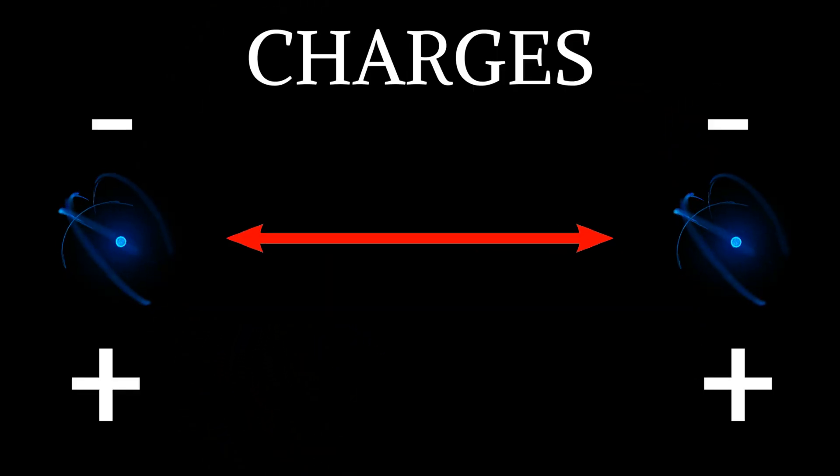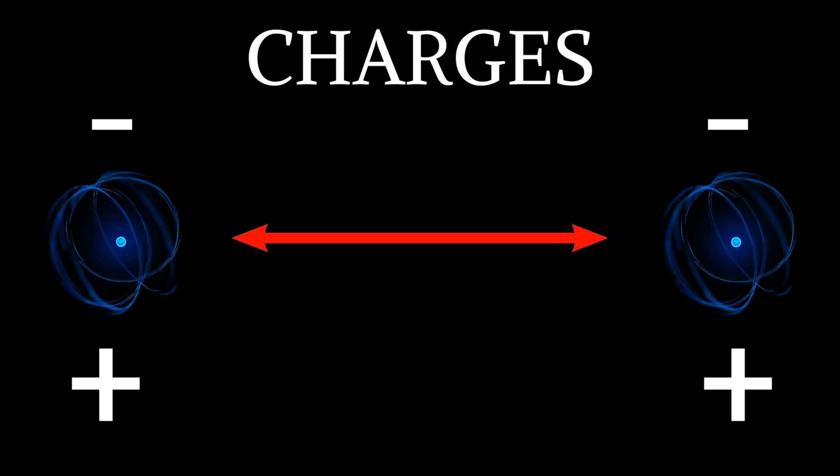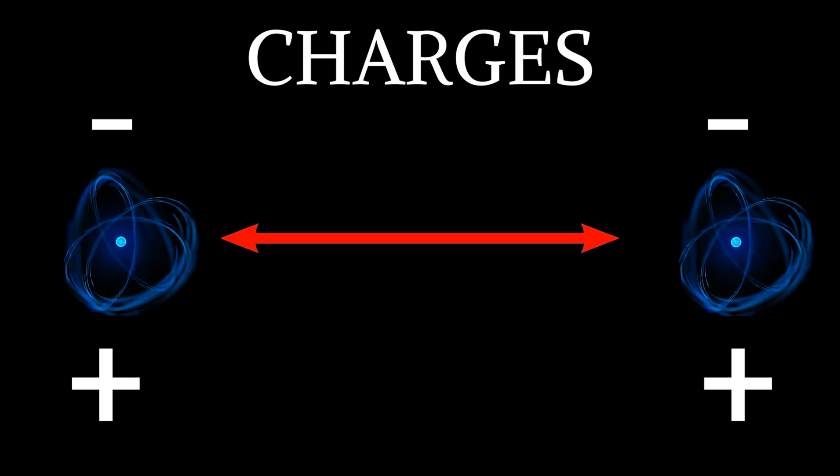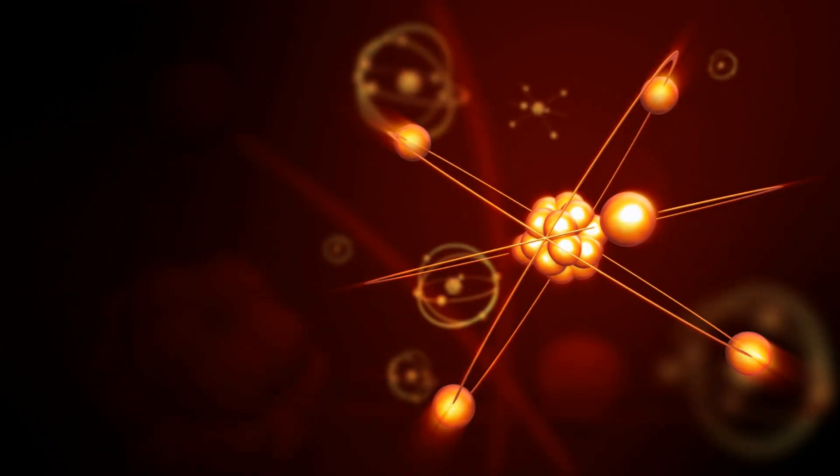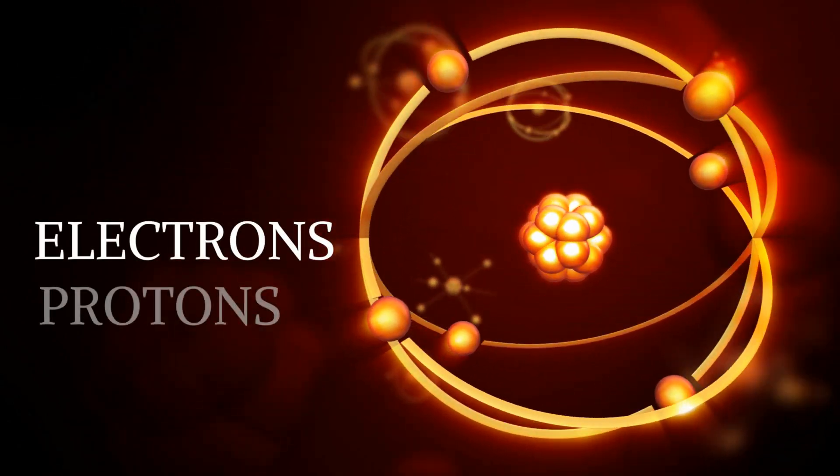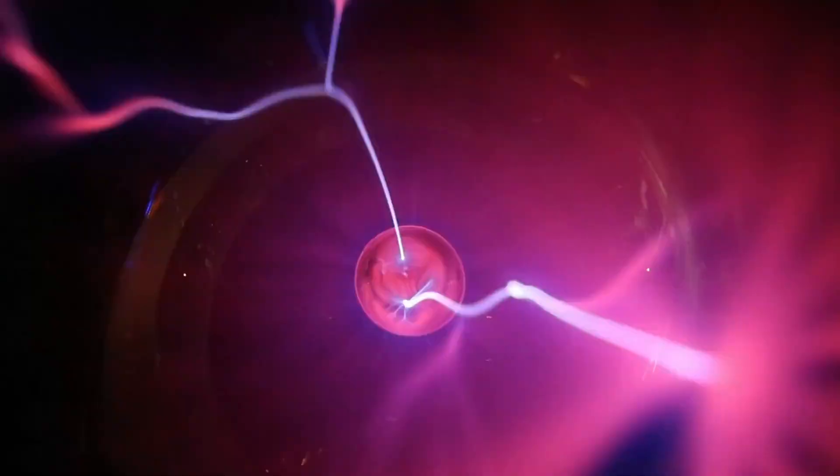Like charges repel each other, for example two positive or two negative charges. Charges of opposite sign—positive and negative—attract each other. An atom is made up of electrons, protons, and neutrons. An electron is a negatively charged component of an atom. Electrons exist outside and around the nucleus of an atom.